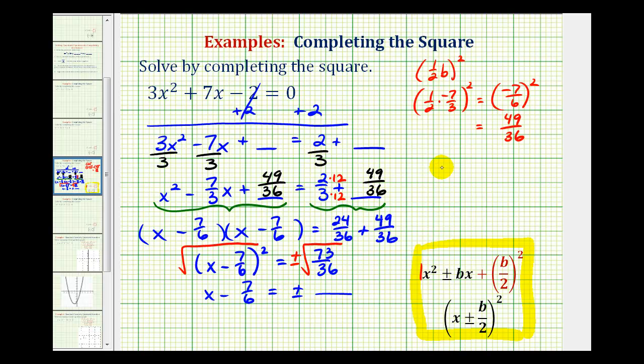To simplify this, when we have a fraction under the square root, we can square root the numerator and denominator separately. The denominator simplifies perfectly to 6, and the numerator does not simplify. To solve for x, we'll add 7/6 to both sides, so we have x = 7/6 ± √73/6.